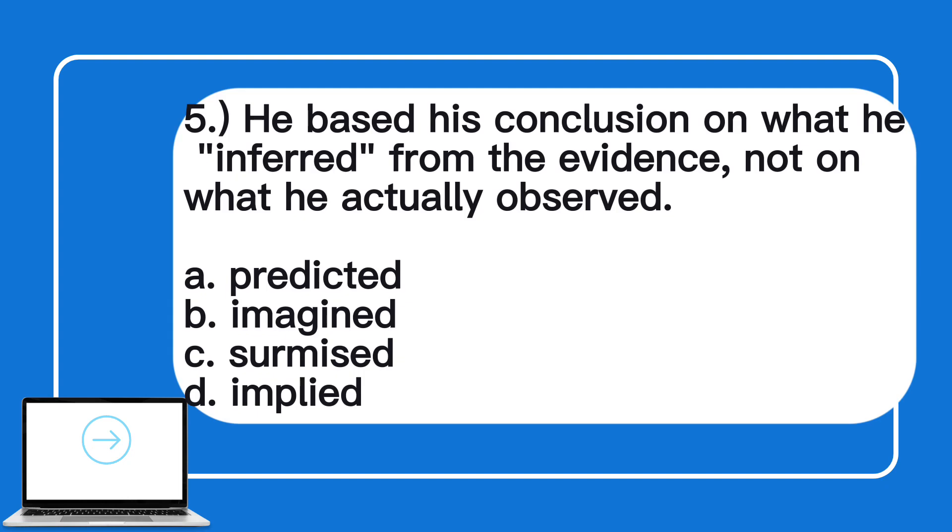5. He based his conclusion on what he inferred from the evidence, not on what he actually observed. A. Predicted, B. Imagined, C. Surmised, D. Implied